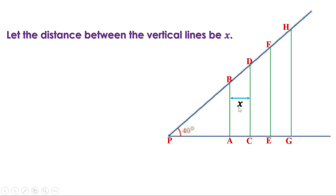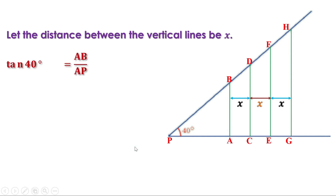So this is X, this is X, this is also X, and this is also X. Now consider the right angle triangle PAB. This angle is 40 degrees. Let us take tan 40. Tan 40 is opposite side by adjacent side, or AB by AP. Taking AP to the other side, we can write AB equals AP into tan 40, or AP·tan 40.